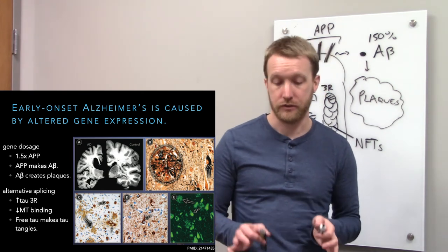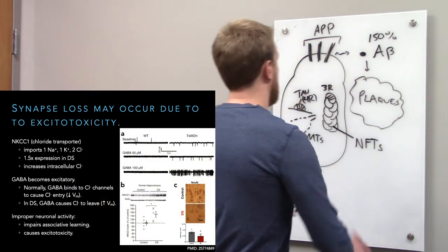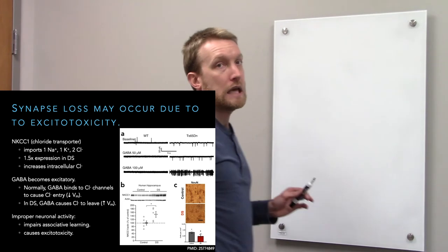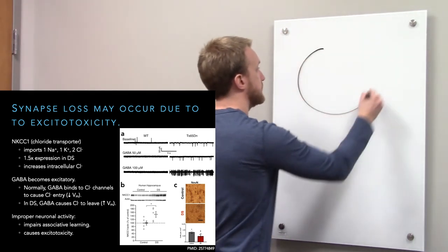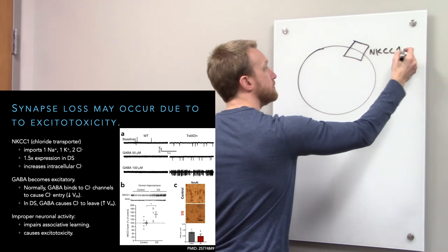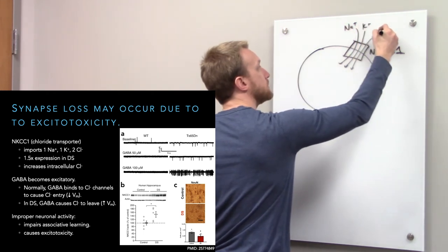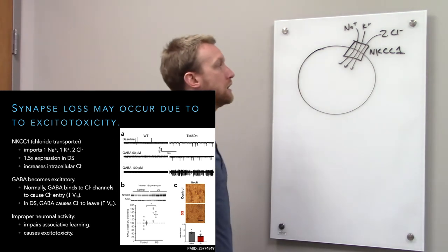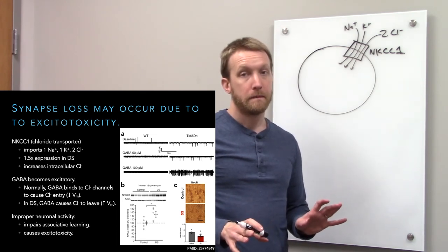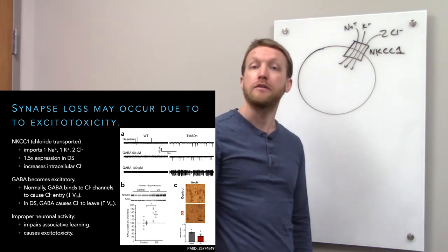What else might be going on in Down syndrome? It's all about gene dosage, but now we need to consider another gene. In this case, a sodium potassium chloride co-transporter, NKCC1. What this is going to do is bring in sodium, potassium and two chloride ions. NKCC1, even though it's not on chromosome 21, is expressed at about 150% the normal level in Down syndrome. Likely there's some transcription factor that stimulates its expression.